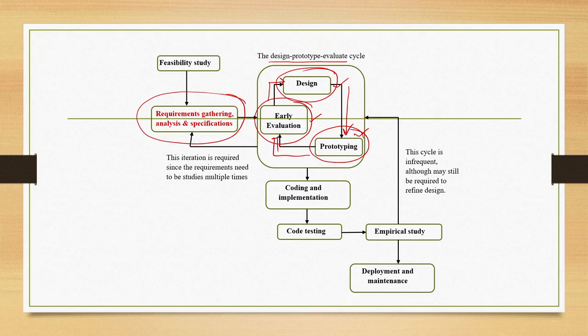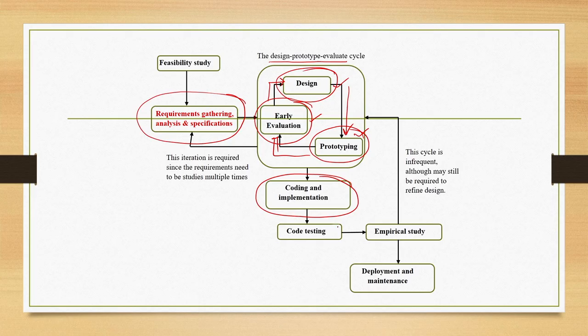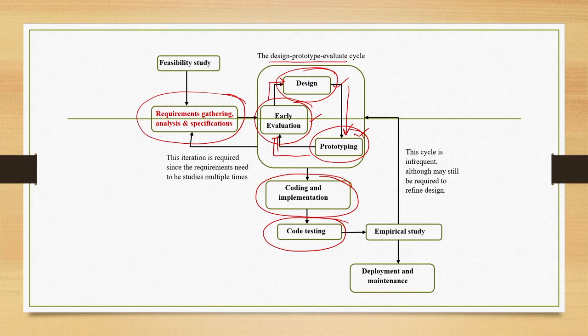It may be noted that system design may not require prototyping, but interface design requires prototyping and evaluation and all these other sub-stages in this cycle. Once we finalize the system design, we go for implementing the design in the coding and implementation stage. Then the code is tested for bugs. Code testing is another major stage in the interactive software development life cycle. After code testing we may get a system that is bug-free and executes properly. However, we still do not know with code testing alone whether the end product is usable.